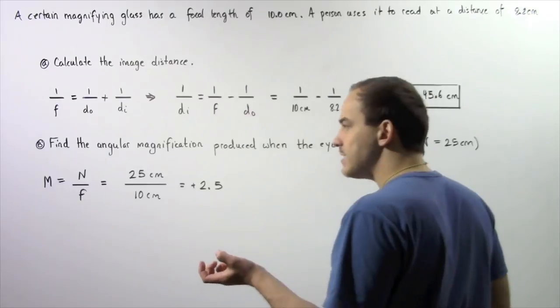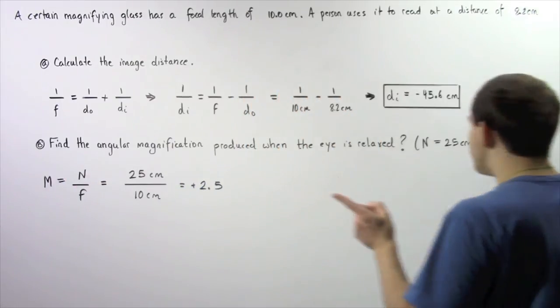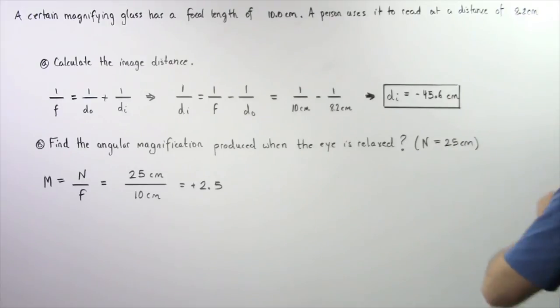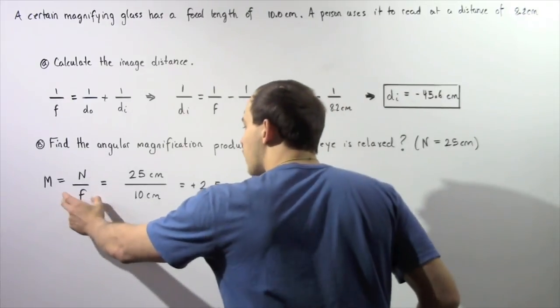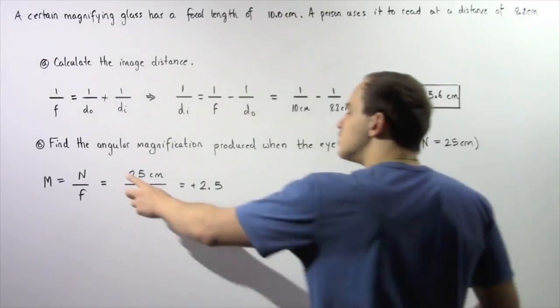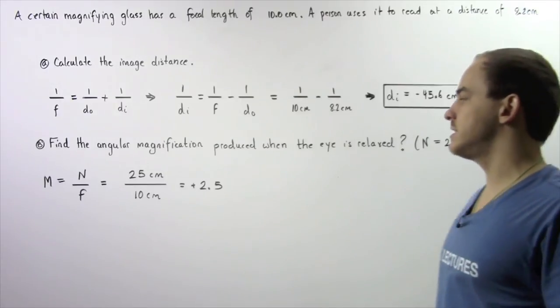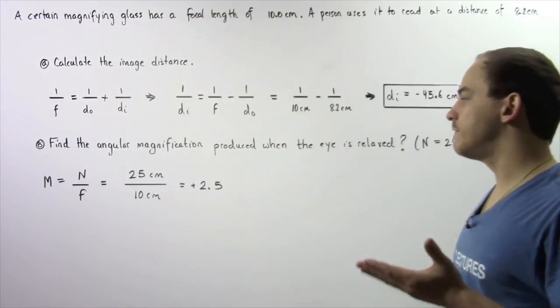M, the angular magnification, is equal to N, the near point of the eye, which is assumed to be 25 centimeters, divided by the focal length of the lens, which is 10 centimeters. So 25 centimeters divided by 10 centimeters gives us a quantity of positive 2.5.